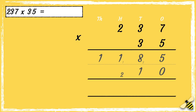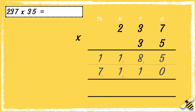Then we can work out 3 tens multiplied by 3 tens — 3 times 3 is 9, and then add the extra 2 is 11. We can drop the 1 down in the thousands column. Then we need to work out 3 tens multiplied by 2 hundreds — 3 times 2 is 6, and then add 1 more is 7.